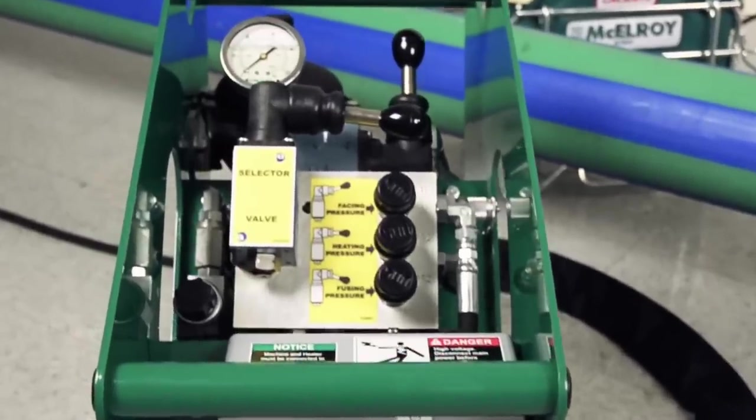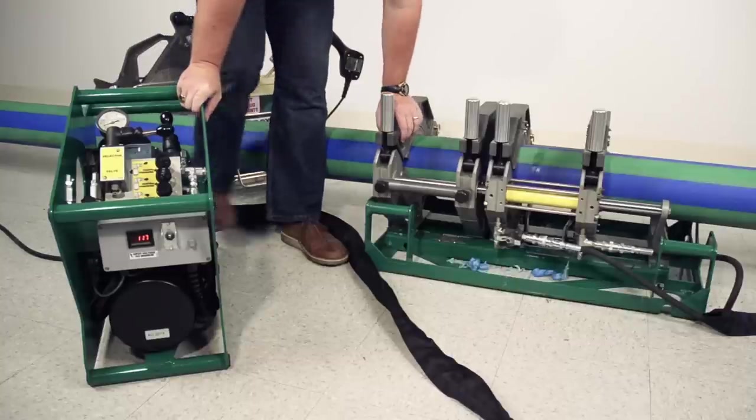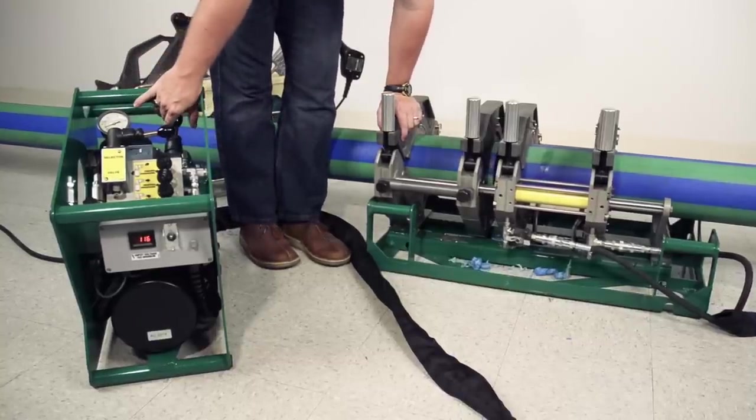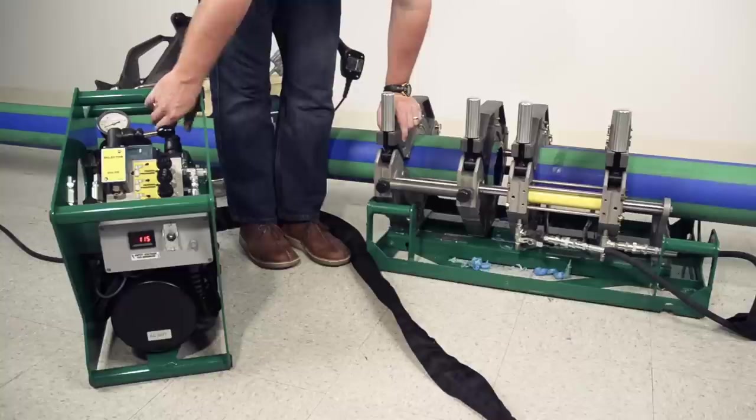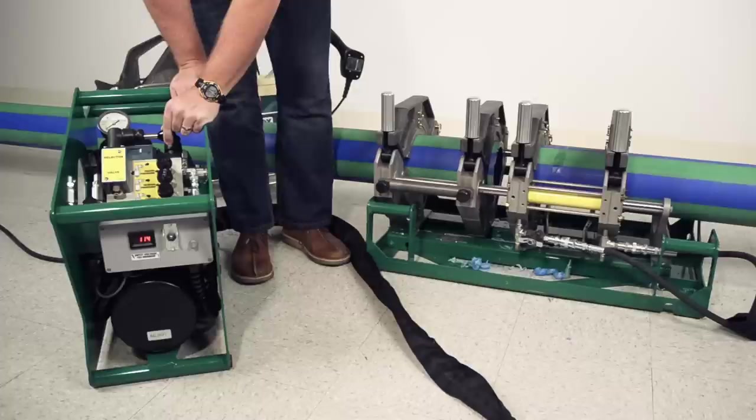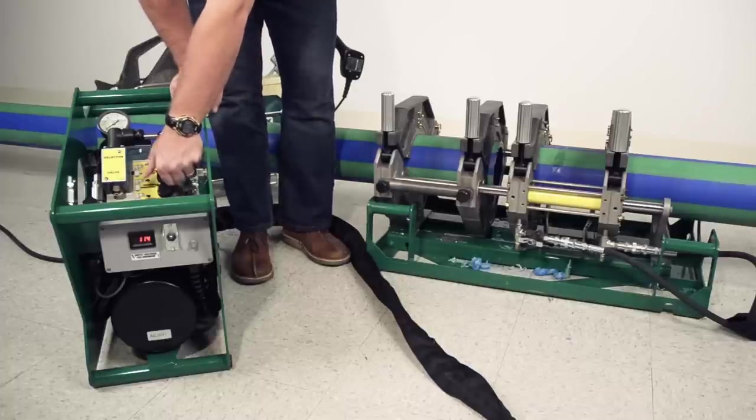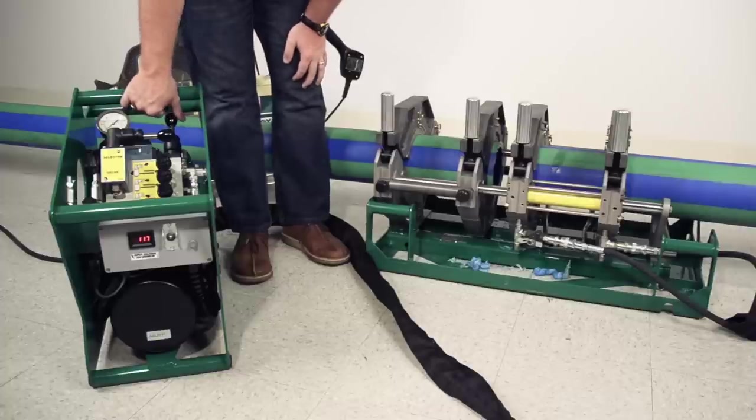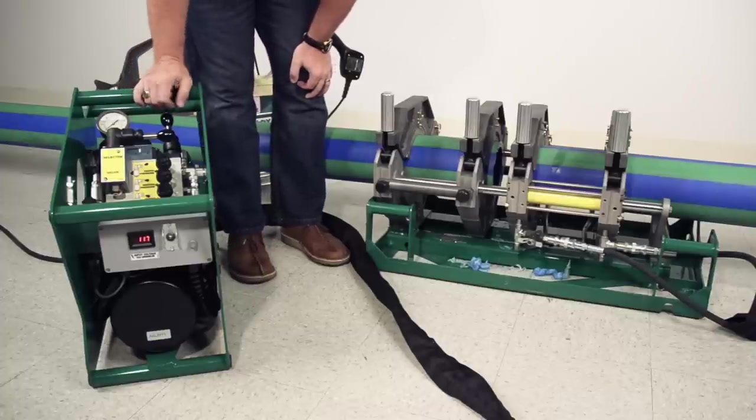Next, we need to set the machine's hydraulics for our fusion. Let's start by measuring drag. We will do this by opening the carriage, with the pipe loaded, until the pipe ends are about 2 inches apart. Click the pressure selector control into the middle position. It is labeled heating. Turn the center pressure-reducing valve all the way counter-clockwise. This will set the pressure to its lowest setting.